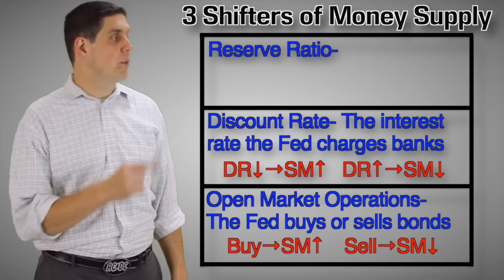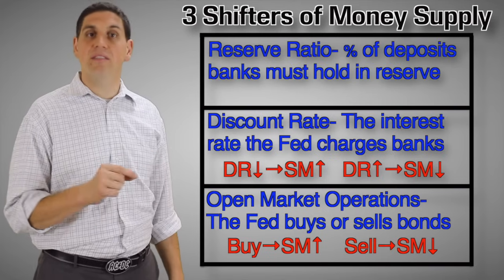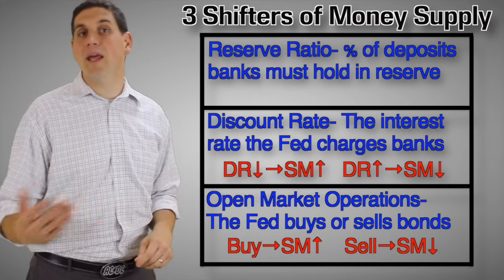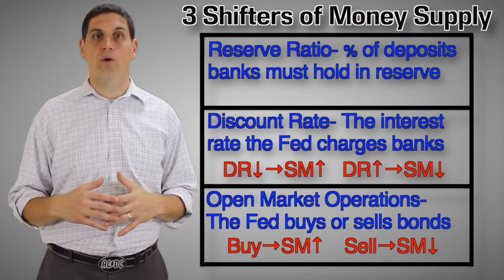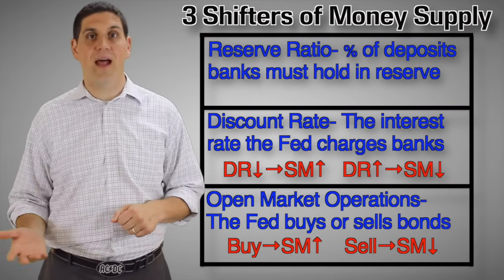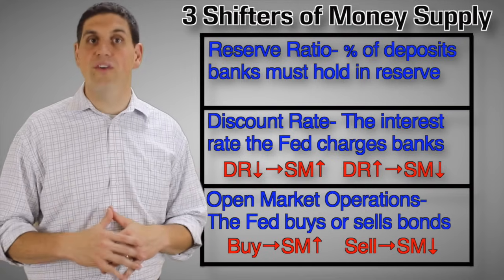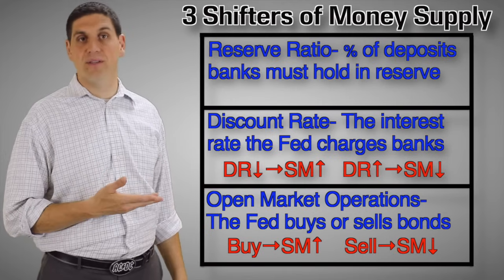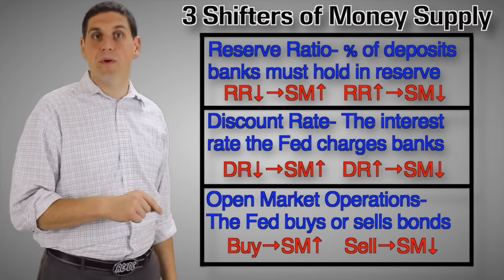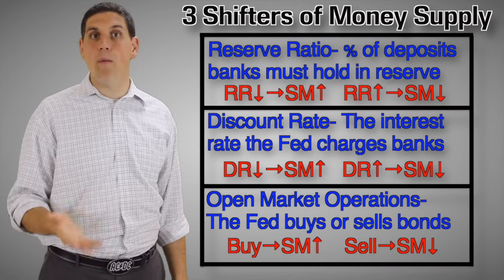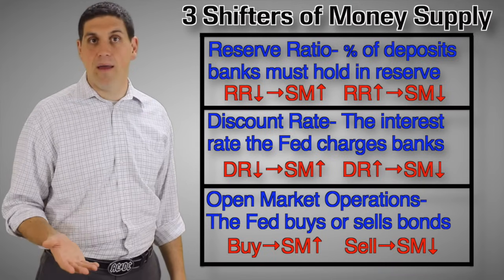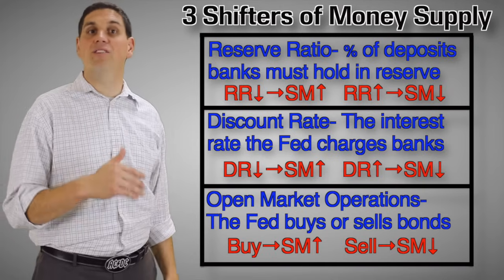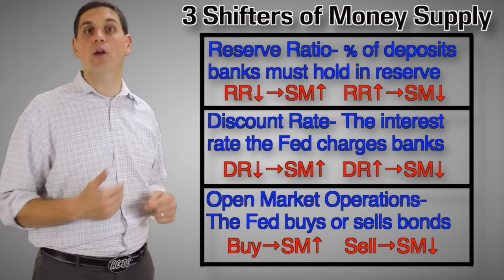The last shifter of money supply is called the reserve requirement. This is the percent that banks have to hold in reserves by law. When you put money in a bank, they don't hold all of it — they hold some and loan the rest out. In the United States, the Federal Reserve has set that at 10%. If the Fed lowered it to 2%, banks can loan out more money, increasing the money supply. If the Fed increased the reserve requirement to 50%, banks could loan out less money, decreasing the money supply.